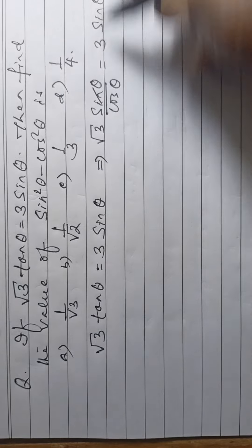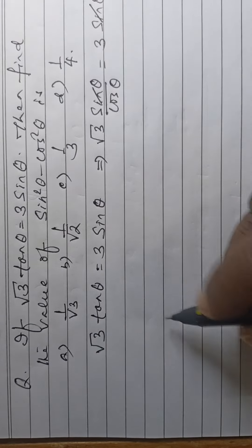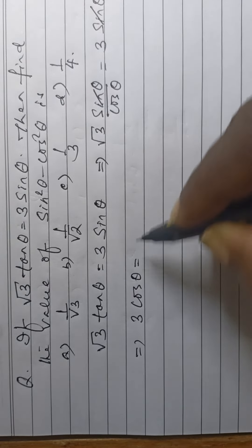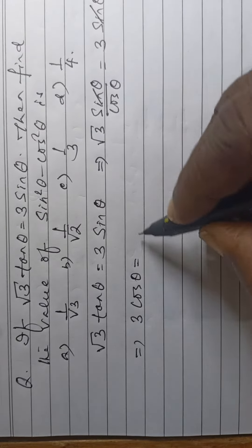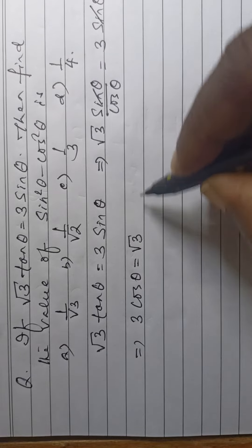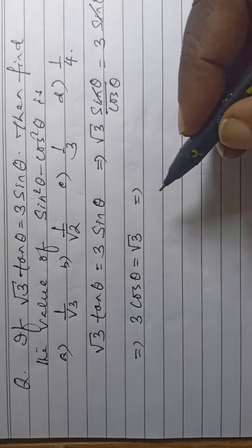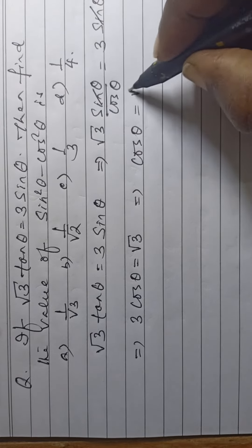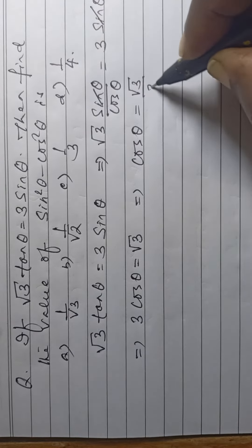So, sin theta cancels. That is, 3 cos theta is equal to root 3 by cross multiplication. So, cos theta is equal to root 3 by 3, that is, 1 by root 3.